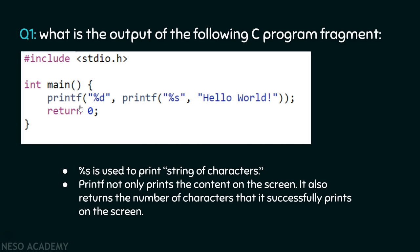But what does the outer printf function print? Printf not only prints the content on the screen — it also returns the number of characters that it successfully prints on the screen. This inner printf function will not only print "hello world" on the screen, but it also returns a value equivalent to the number of characters it successfully printed. The number of characters in "hello world" is: 1, 2, 3, 4, 5, 6 — and you have to include the blank space character as well.